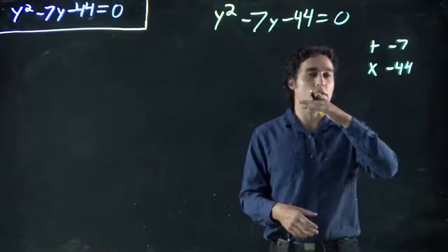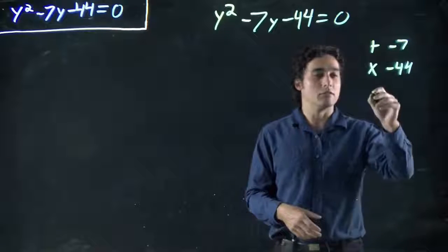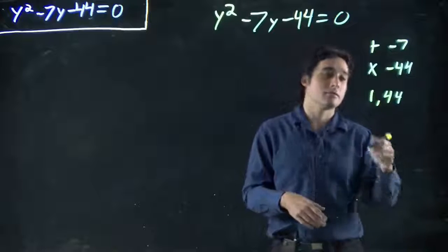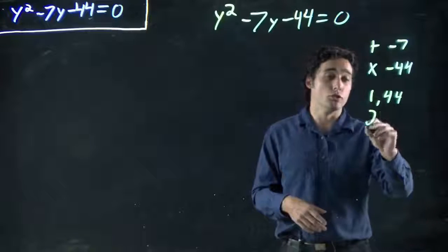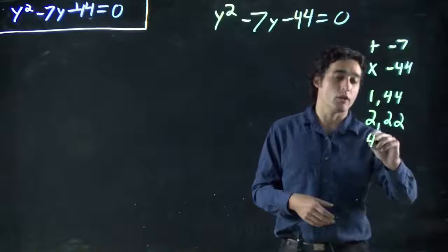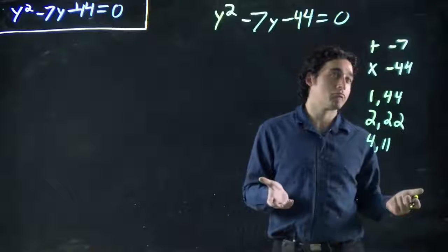So, -44. What numbers will give us -44? Well, 1 and 44—that case always exists. 2 and 22, 4 and 11, and really, can't think of any others.